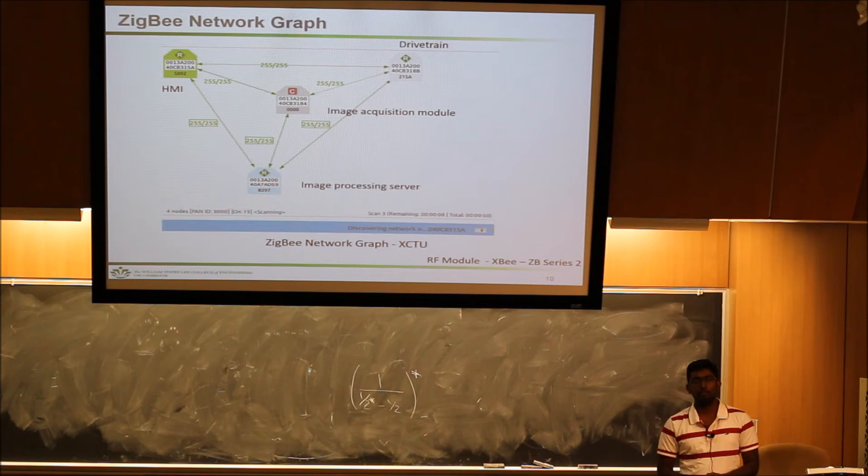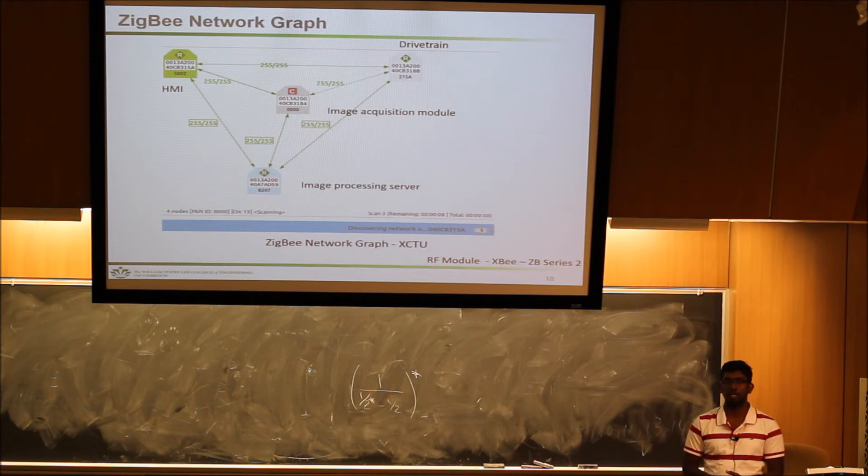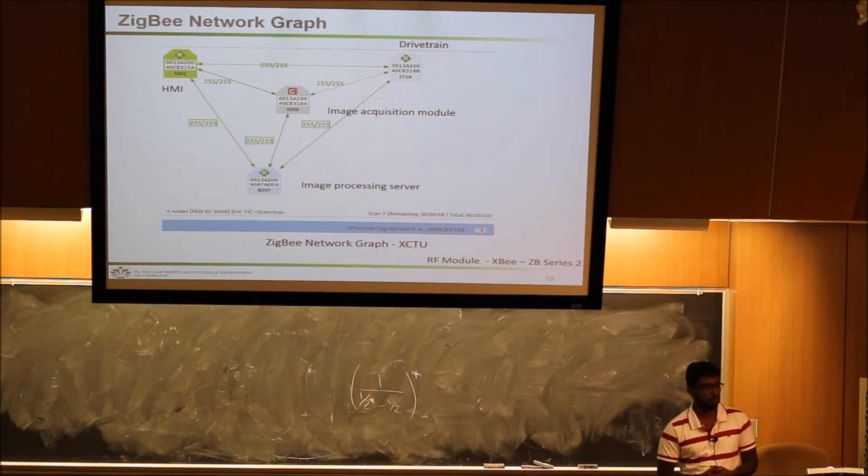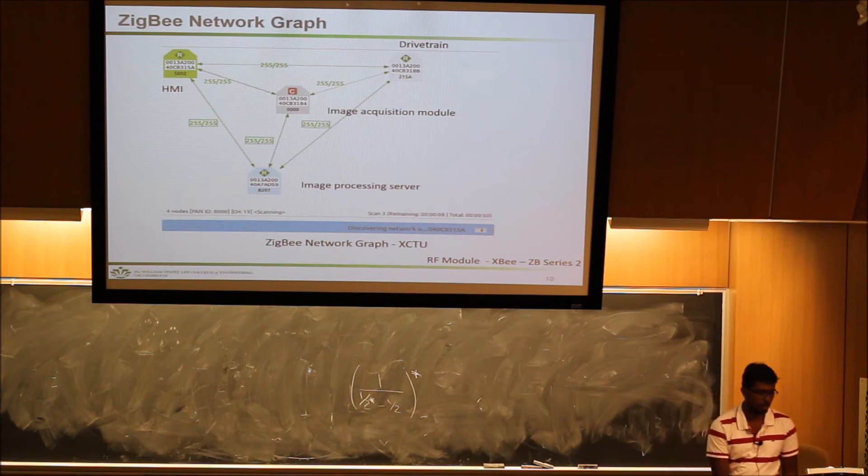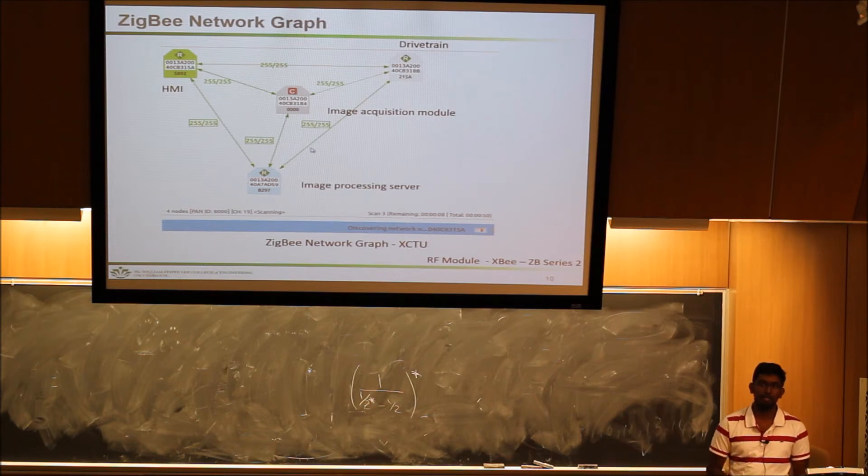We use XBee modules, the XB Series 2 modules for communication. We chose the coordinator node to be the one that's on the image acquisition module, and the rest of all the modules we chose as routers.